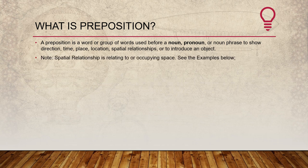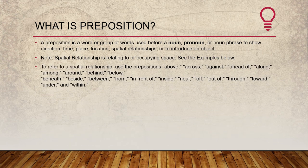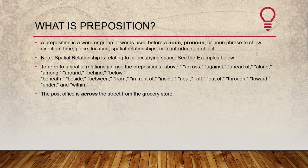Spatial relationship is relating to or occupying space. See the examples below. To refer to a spatial relationship, use the prepositions: above, across, against, ahead, along, among, around, behind, below, beneath, beside, between, in front of, near, off, out of, through, toward, under, and within.